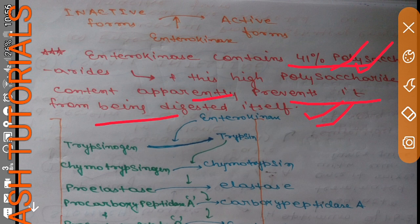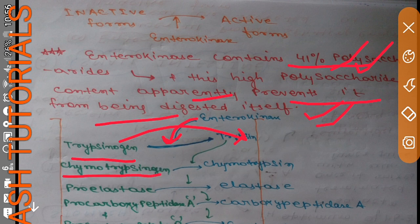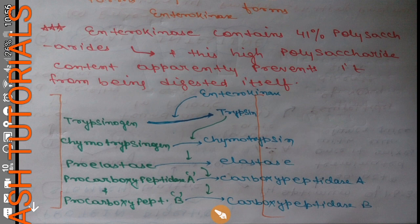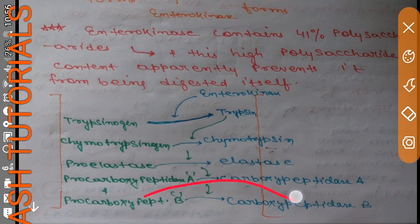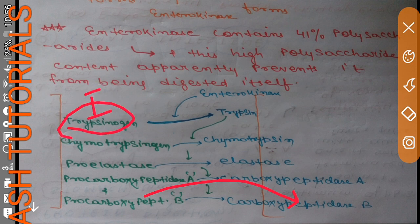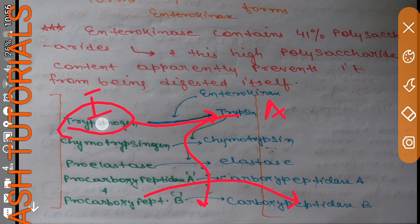Enterokinase first acts on trypsinogen and converts it into trypsin. Trypsin then acts on other enzymes of the pancreatic juice: chymotrypsinogen is converted into chymotrypsin, proelastase into elastase, procarboxypeptidase A into carboxypeptidase A, and procarboxypeptidase B into carboxypeptidase B. So enterokinase activates trypsinogen, and trypsin then activates the remaining inactive forms.